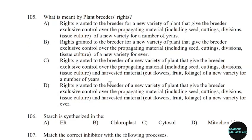105th question: What is meant by plant breeders' rights? Correct answer: Option C — Rights granted to the breeder of a new variety of plant that give the breeder exclusive control over the propagation material and harvested material of a new variety for a number of years.